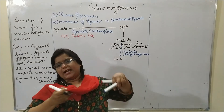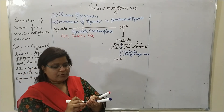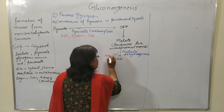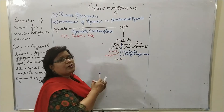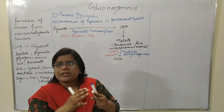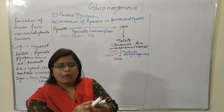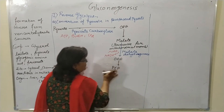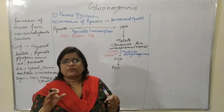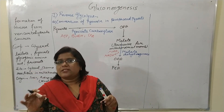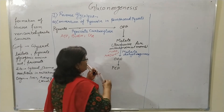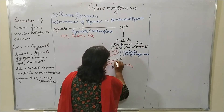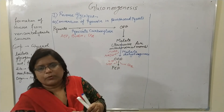During the malate dehydrogenase conversion, NADH is formed. Then, the oxaloacetic acid is converted into phosphoenolpyruvate (PEP). During this conversion, GTP is used and GDP is formed, and CO2 is released.